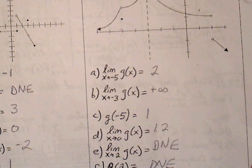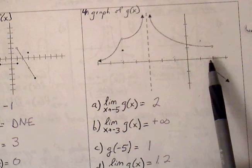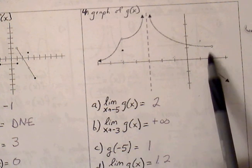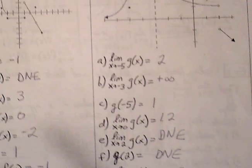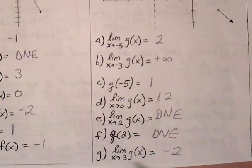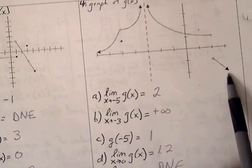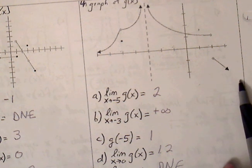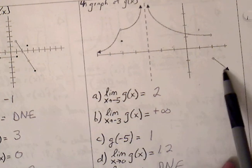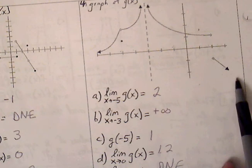g(2) — looking for the ordered pair at x = 2, there are no closed circles, so nothing is defined at 2; it does not exist or is undefined. Finally, for the limit as x approaches 3, the graph goes through the point at a y-value of negative 2, and the graph connects through that point from both sides, so the limit is equal to negative 2.